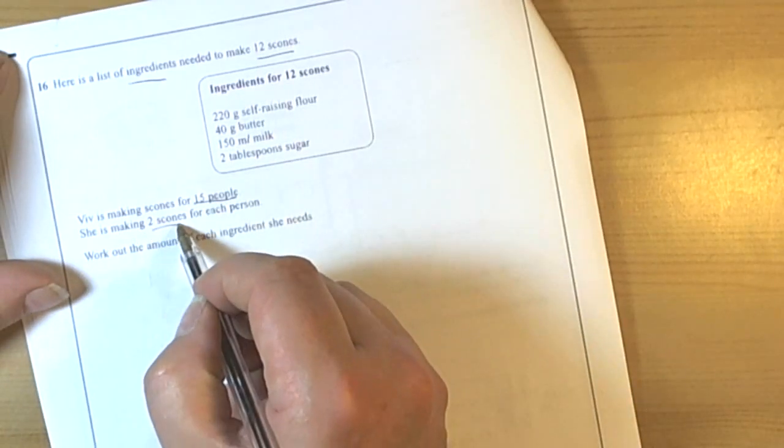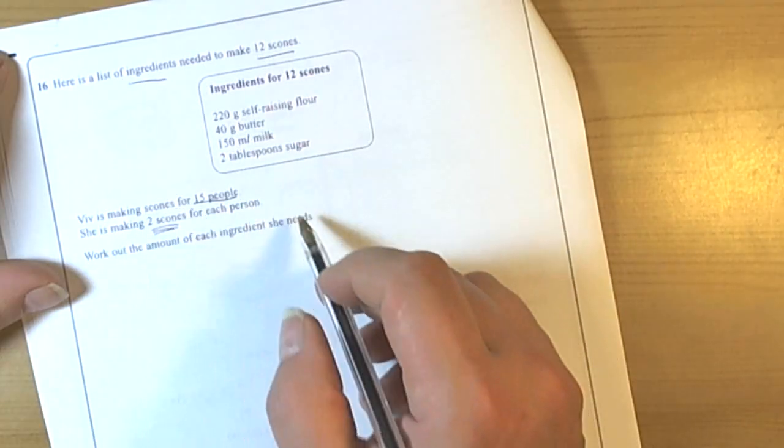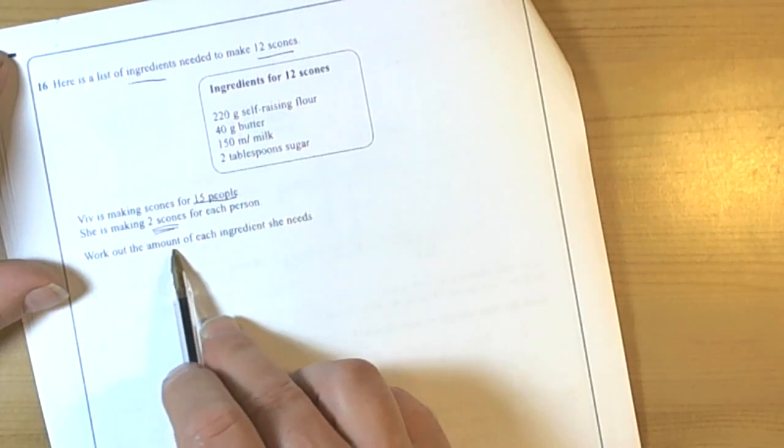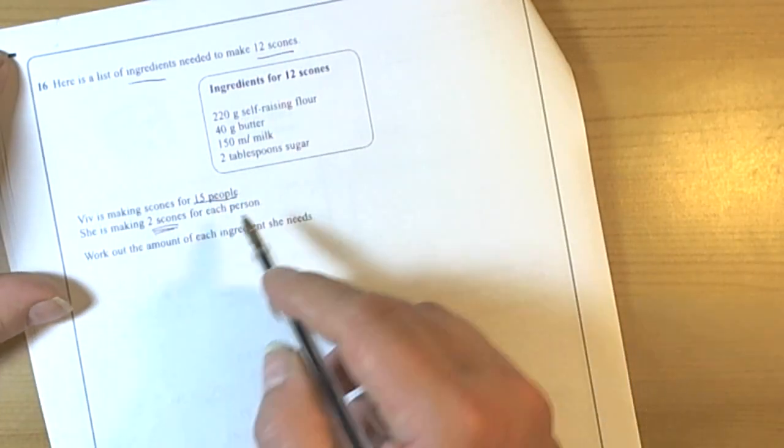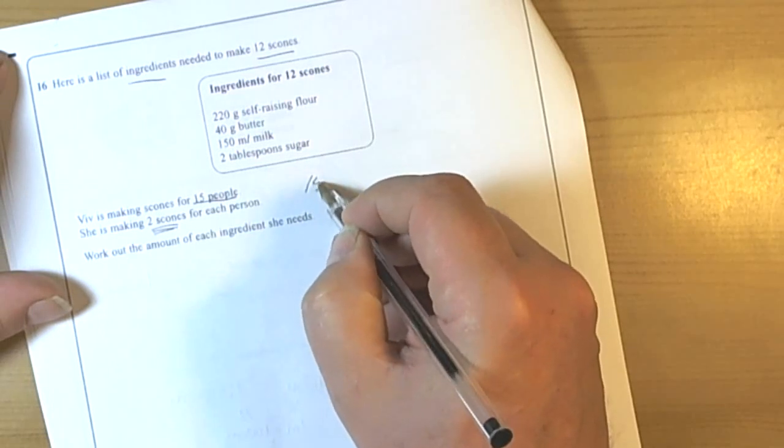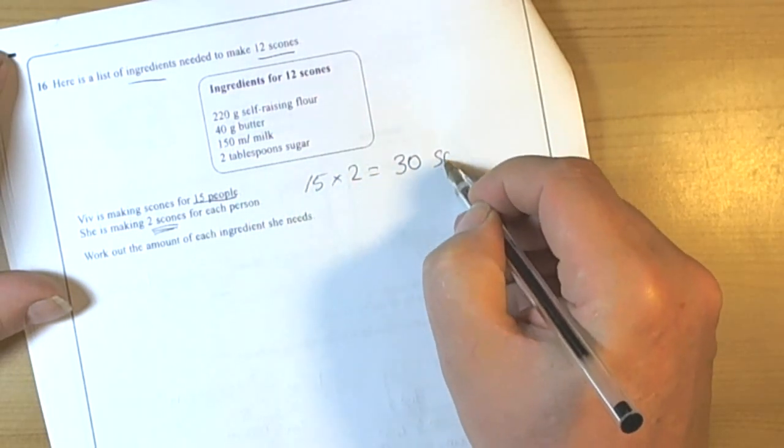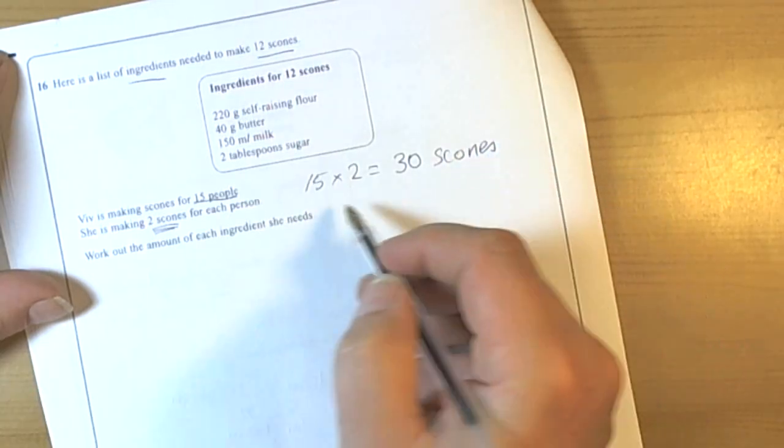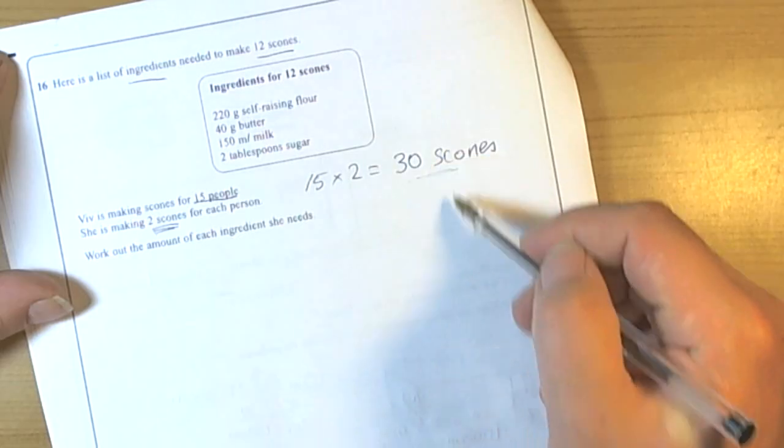She's making 2 scones for each person, that's obviously important as well. So from this information we can see we've got to work out the amount of ingredients you need for these 15 people, 2 scones each. The first thing we need to recognize is we actually need to make 30 scones. Again, highlighting key information allowing us to get the marks as we go through for method.